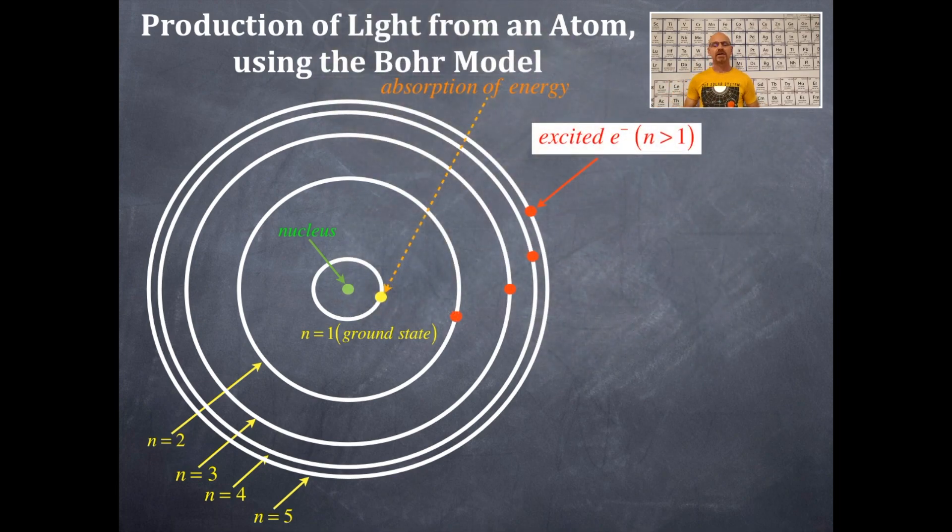So, here are the different possibilities. All of these red electron dots here are in n equals greater than 1. So, they are all called excited electrons because they're above the ground state. So, they're all greater than n equals 1. It can only absorb a certain amount of energy. Then, it can go to any one of these distances.